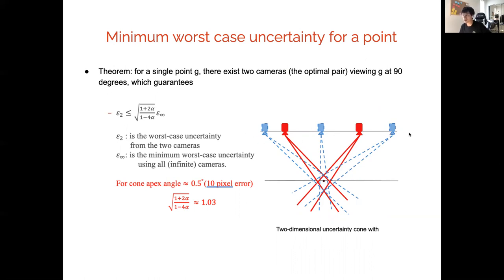This approximation ratio is about 1.03 for 10 pixel error. That's why we call it the optimal pair, because it's near optimal approximation.